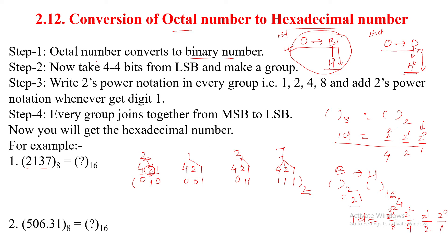Step 1 is complete — the octal number has been converted to binary. Now for the next step: take 4 bits from the LSB and make a group. This is the LSB — least significant bit. Take 4 bits and make a group: bits 1, 2, 3, 4. Then the next group: bits 1, 2, 3, 4. Apply the 2's power notation — place values 1, 2, 4, 8 — to every group.